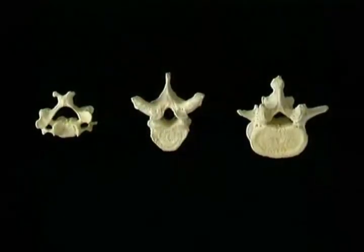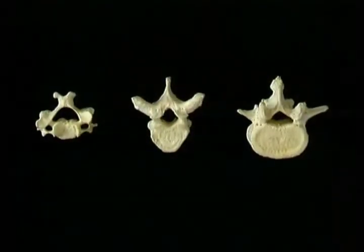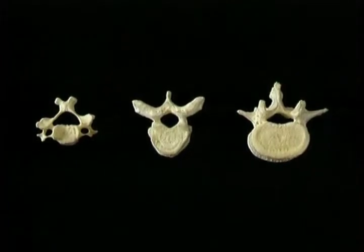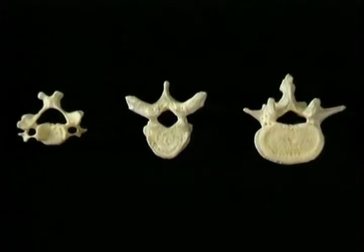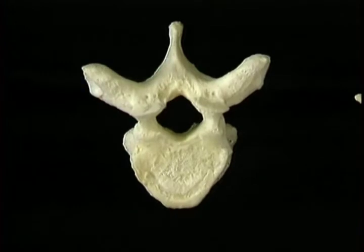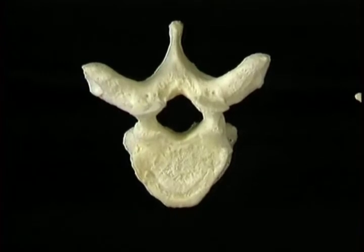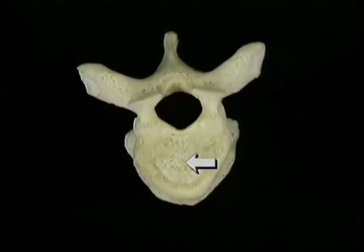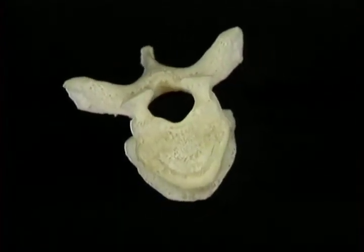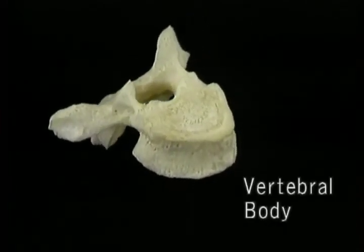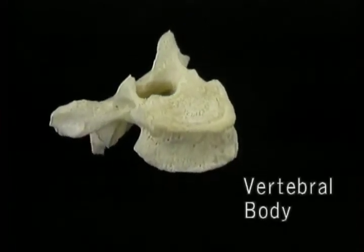There are marked differences between vertebrae of different regions, but they all have some basic features in common. We'll look at a typical thoracic vertebra to see what these features are. In front, this cylindrical mass of bone — the body of the vertebra — supports the weight of everything that's above it.